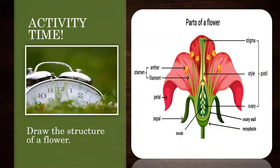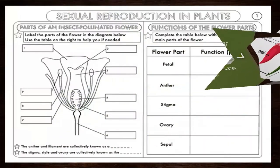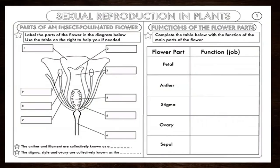Here is an example of the structure of a flower. Draw the structure of a flower, then answer the following questions. Identify the parts of an insect-pollinated flower and provide the function of each flower part. You can do this on paper or take a screenshot and submit it in our group chat.